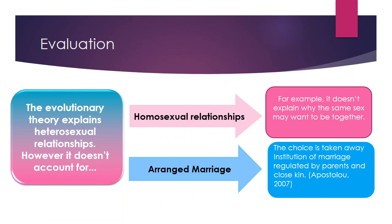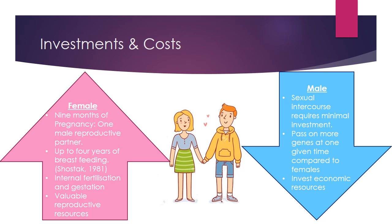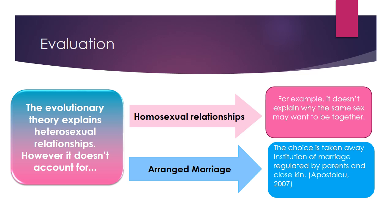To conclude, the sex differences shown here may reflect evolutionary selection pressures on males and females, showing how they differ. This provides cross-cultural evidence on sex differences and reproductive strategies. However, the evolutionary theory of mate selection does not account for homosexual relationships or arranged marriage. Thank you.